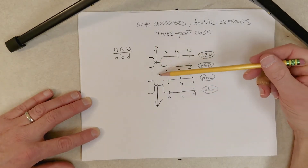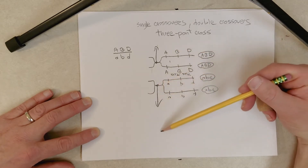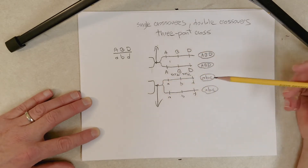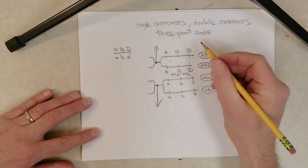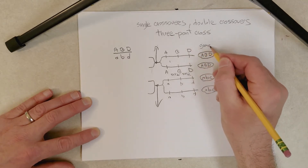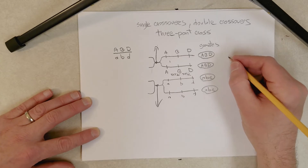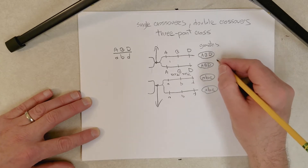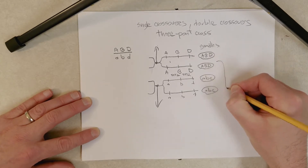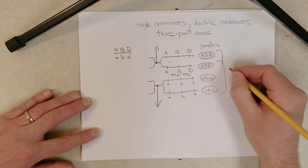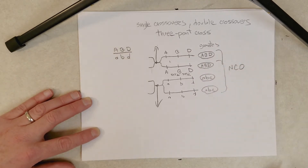During anaphase one, this chromosome goes one way, this one goes the other way, and eventually we end up with gametes. We're going to call all of these non-crossover gametes — NCO gametes.